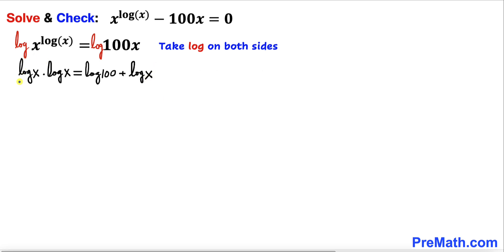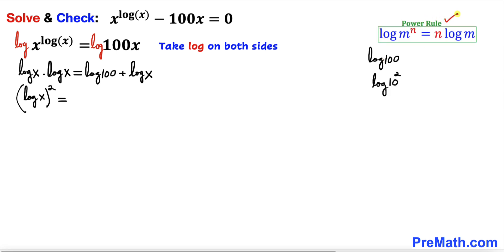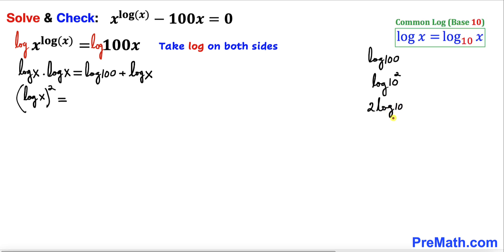Now log(x) times log(x) gives us log(x) whole squared, so the left hand side becomes log(x) squared. Now let's focus on log(100) — this 100 can be written as 10 squared, and using the power rule we can write 2 log(10). We notice the base for this log is missing.